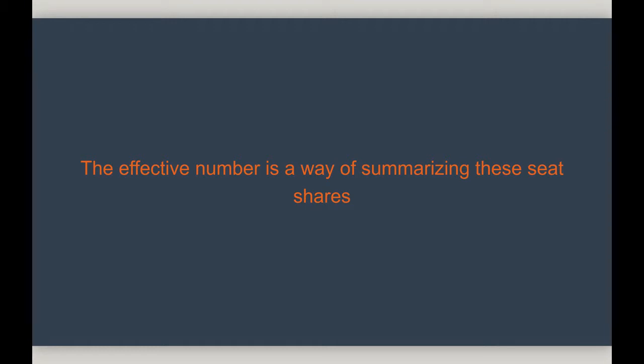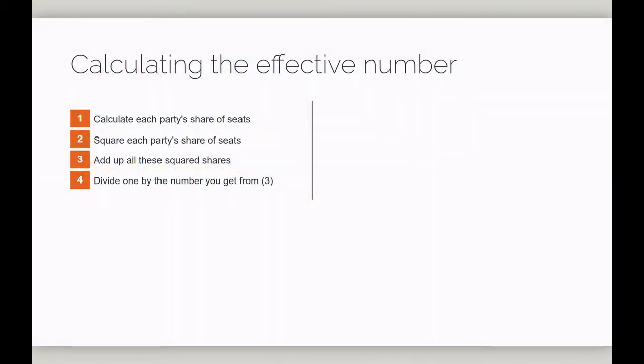To calculate the effective number, we take each party's share of seats, we square it, we add up all these squared shares, and divide one by this number.